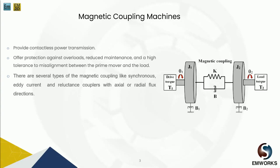Magnetic couplings couple a motor to a load using the magnetic field between the driver and the driven part, without any mechanical connection. They are used mainly to connect motors and loads in instances where a mechanical separation of the motor and load is required — a common situation found in pumps and turbines.